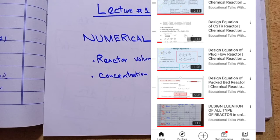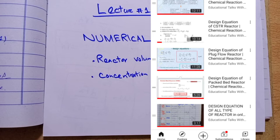We have started a series on Chemical Reaction Engineering, which is a core subject of chemical engineering. In lectures 1 to 10, we have discussed in detail the rate of reaction, types of reactors, each reactor's applications, advantages, disadvantages, design equations, and the general mole balance equation.